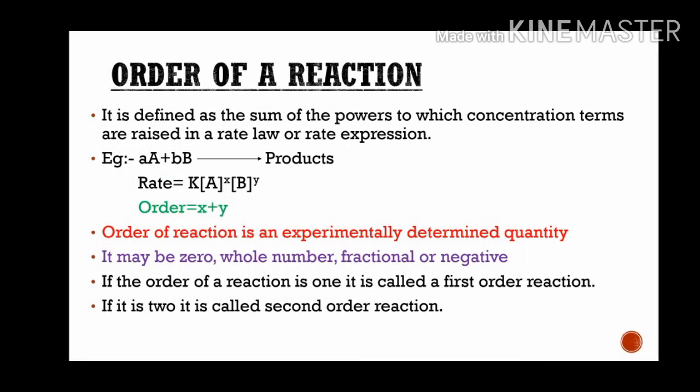Hi friends. In the class of Average Rate of a Reaction and Instantaneous Rate of a Reaction, what is the rate of a reaction? This is the order of a reaction. In the class of A plus B giving products, the rate is equal to k into concentration of A raised to x, into concentration of B raised to y.